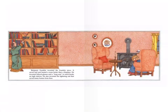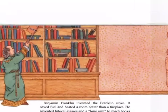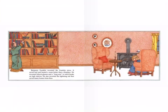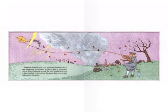Benjamin Franklin invented the Franklin stove — it saved fuel and heated a room better than a fireplace. He invented bifocal glasses, which have two different kinds of lenses so you can see both far away and close up. He invented a long arm to reach books on high shelves, like a grabber hook. He also invented the lightning rod, which saved many homes from fires. In one dangerous experiment, he flew a kite in a thunderstorm — when lightning struck the kite, sparks flew down a key attached to the string. Benjamin had proved that lightning is electricity.